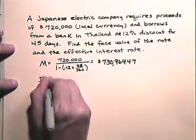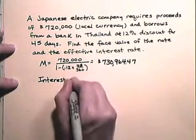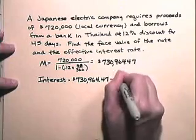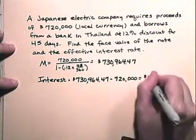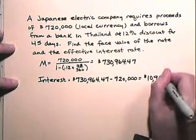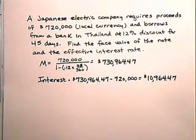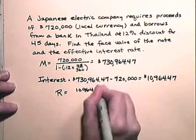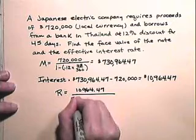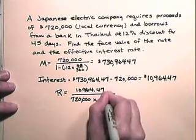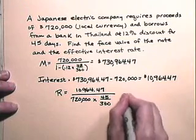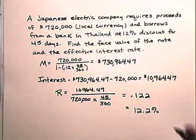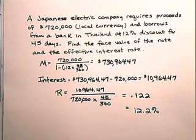So the interest will be the difference between the face value and the proceeds, $720,000. So the interest will be $10,964.47. Now let's find the effective interest rate. The rate will be $10,964.47 divided by 720,000 times 45 over 360, which gives us 0.122 or 12.2%. So the effective rate of the loan will be 12.2%.